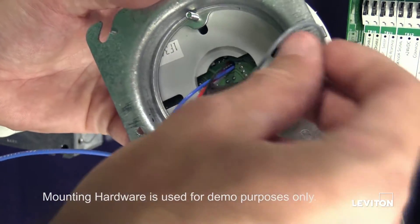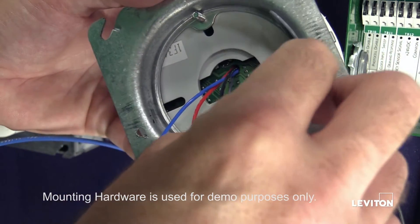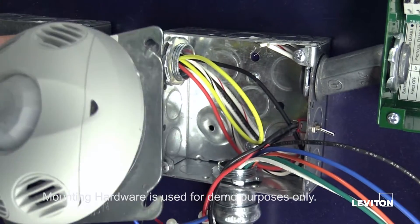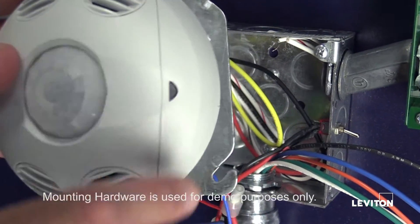The grey wire is for occupancy and hold off photocell. We will be using the blue wire instead. You can use 18 gauge wire or CAT6 cable to extend the wire runs.